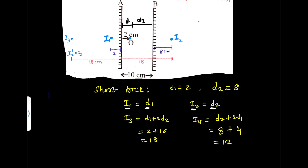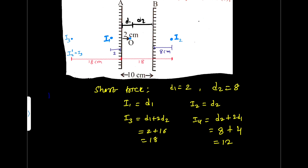The second image for mirror 1 — which is the third image overall — is given by d1 plus 2·d2, where d1 is the distance between the object and mirror 1, and d2 is the distance between the object and mirror 2. Here d1 is 2 and d2 is 8 centimeters, so it is 2 plus 2 times 8 = 2 plus 16 = 18. So we get the same answer.